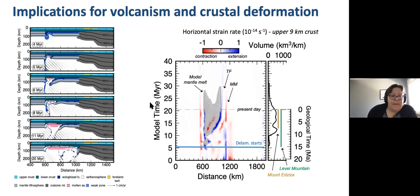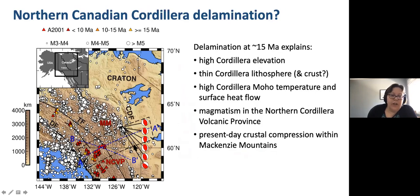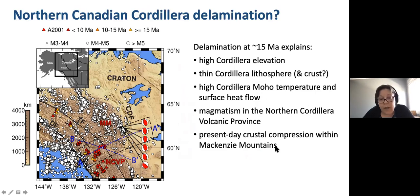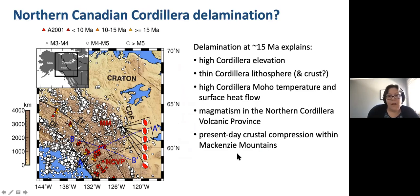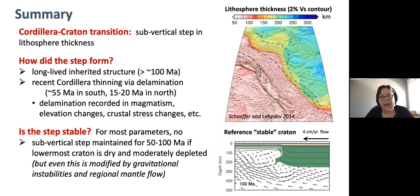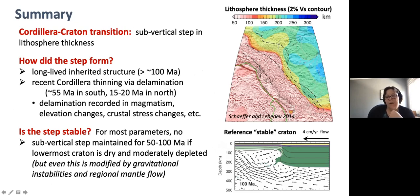To sum up this part: we're suggesting that delamination could have occurred below this area. This could explain a number of observations like the elevation, thin lithosphere, high temperatures and heat flow, as well as magmatism and perhaps crustal compression. This is ongoing work and we're still testing different parameters, so I welcome any feedback. So this is a quick summary: we have a very sharp contrast in lithosphere thickness - in terms of seismic velocities, this is one of the highest lateral changes in seismic velocity in the mantle seen anywhere on Earth. This is really quite intriguing and leads to questions about how this structure actually formed, whether it's long-lived or more recent, and whether this structure is actually stable.